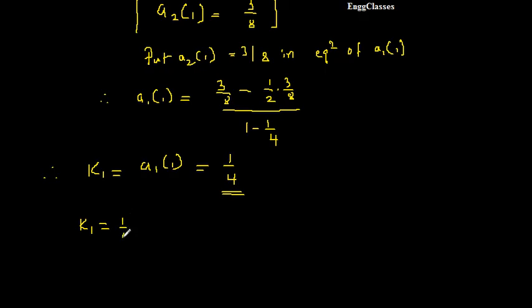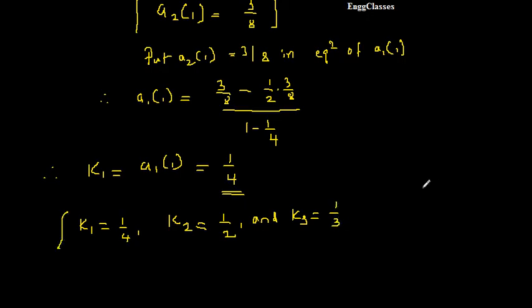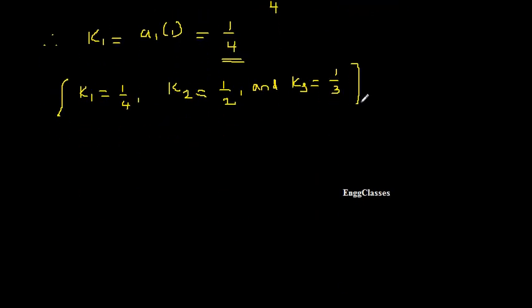So we have found all the lattice coefficients: K1 = 1/4, K2 = 1/2, and K3 = 1/3. Just be careful with the mathematics and make sure you get the equations correct to arrive at these answers.